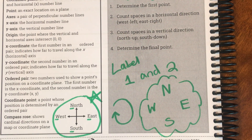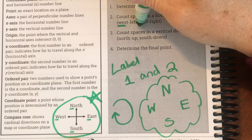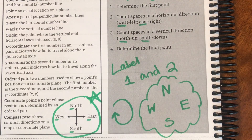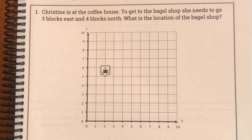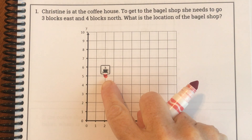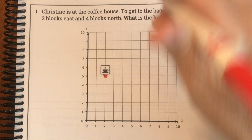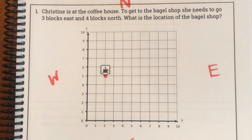So what does this actually look like? Here's my first problem. Christina is at the coffee house. To get to the bagel shop, she needs to go three blocks east and four blocks north. What is the location of the bagel shop? Before I even start, I'm going to make my point — that's where the coffee shop is — and label 'never eat sour watermelon' to help prevent mistakes.